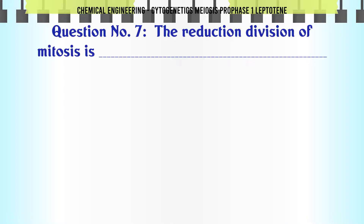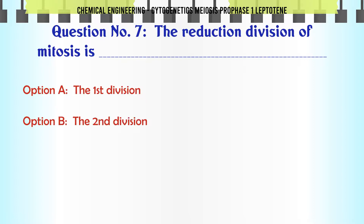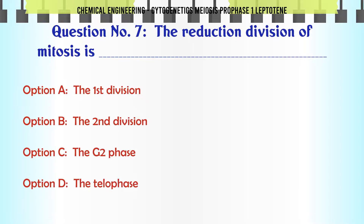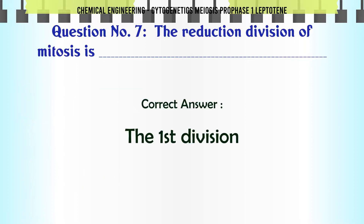The reduction division of meiosis is: A. The first division. B. The second division. C. The G2 phase. D. The telophase. The correct answer is: The first division.